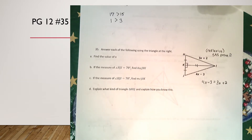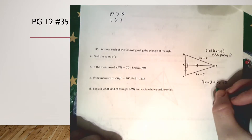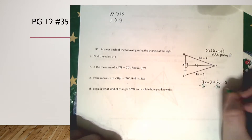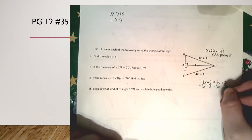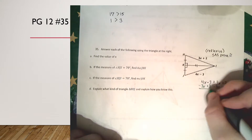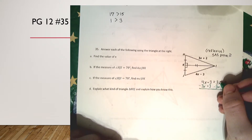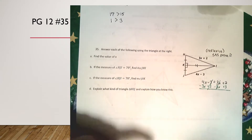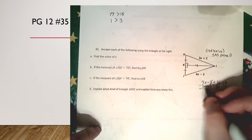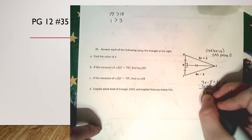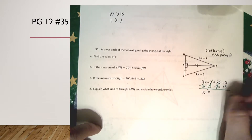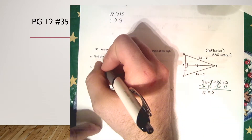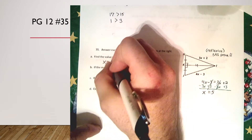I'm going to get x by itself by subtracting 3x from both sides and adding 3 to both sides. That cancels out the 3x on one side and the 3 on the other. So 4x minus 3x is just x, and 2 plus 3 is 5. The value of x is 5.